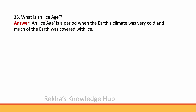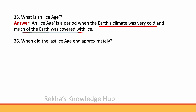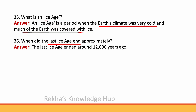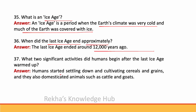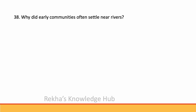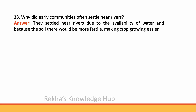What is an ice age? An ice age is a period when the Earth's climate was very cold and much of the Earth was covered with ice. The last ice age ended around 12,000 years ago. After the ice age warmed up, humans started settling down and cultivating cereals and grains, and they also domesticated animals such as cattle and goats. Early communities often settled near rivers due to the availability of water and because the soil there would be more fertile, making crop growing easier.